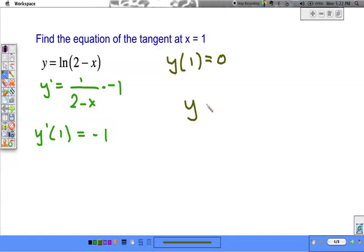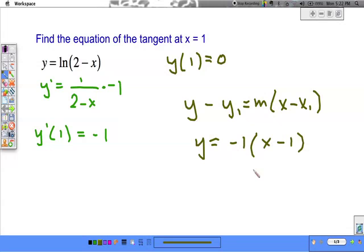Point slope form. y minus 0. So y equals negative 1 times x minus 1. Or simply put, y equals negative x plus 1. There is a line that is tangent to our function at x equals 1.